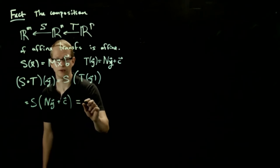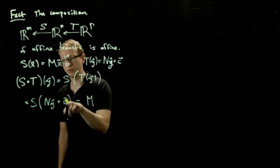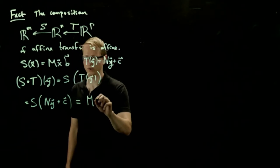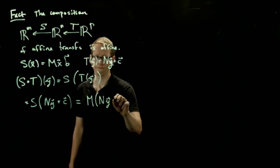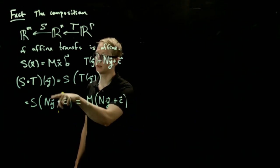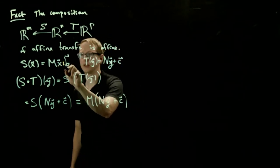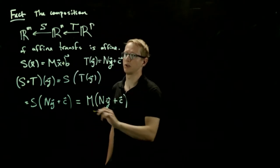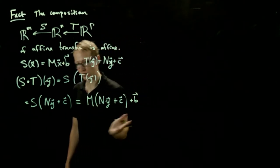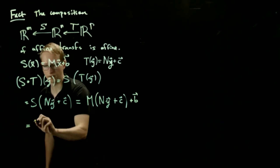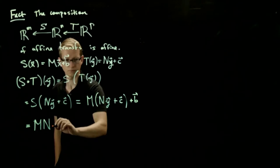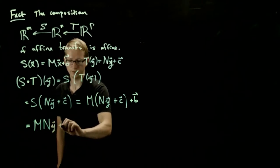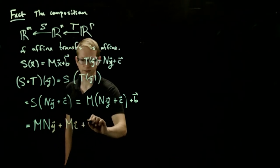And this equals M times the input of this function, which is Ny plus C, plus the associated B from the transformation S. And if you distribute this all out, we get MN times Y plus MC plus B.